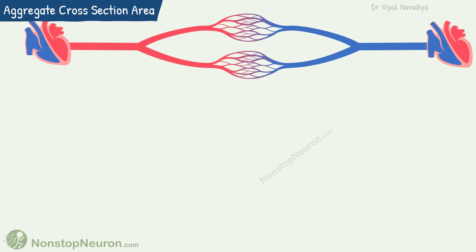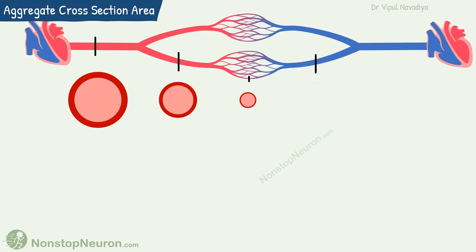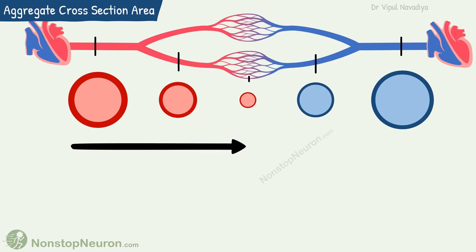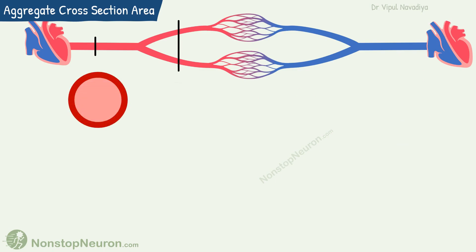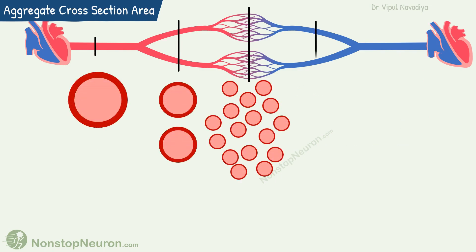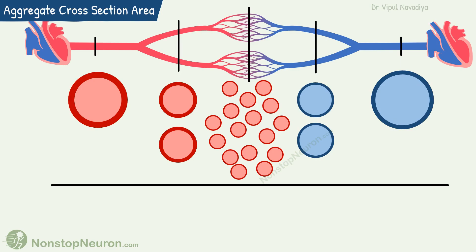Now let's talk about cross-section area. It's quite obvious the larger the radius, the larger the cross-section area. So the cross-section area of an individual vessel decreases as we go from the aorta to capillaries, and then again increases as we go towards the vena cava. But when we look at the aggregate cross-section area of all vessels at a particular level, the picture is quite different.